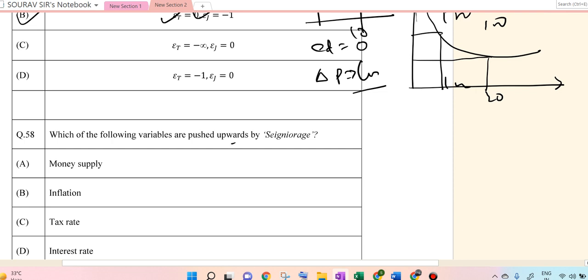In Q58, what you can see is that the following variables pushed upward. Money supply, enhancement of money supply and inflation, these push wage values go up. So the answer to this question is A and B.